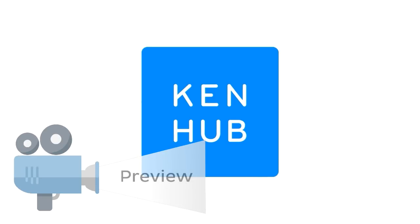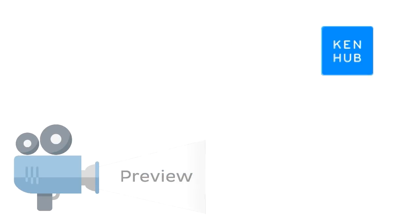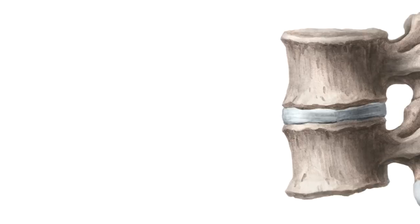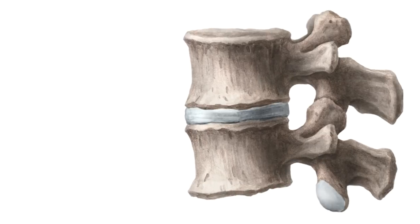Hello everyone, this is João from KenHub and on this histology tutorial we will be discussing one of the three types of cartilage that we have in our body, which is known as fibrocartilage. Before we begin discussing fibrocartilage, let's first have a look at cartilage in general. Here in this image we can see the cartilage that cushions the spinal vertebrae, which is known as an intervertebral disc.